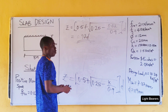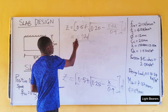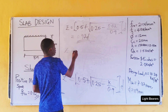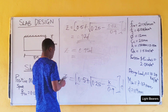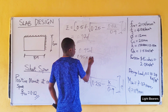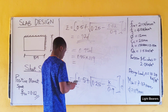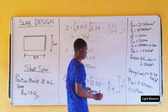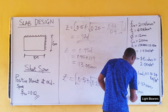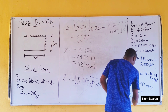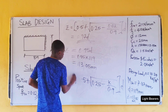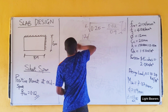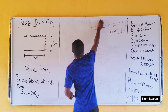Now, in clause 3.4.4.4 of the BS code, if z is greater than 0.95d, we would adopt z to be 0.95d. So z equals 0.95d. We have 0.95 multiplied by 119, which gives us 113.05 millimeters.